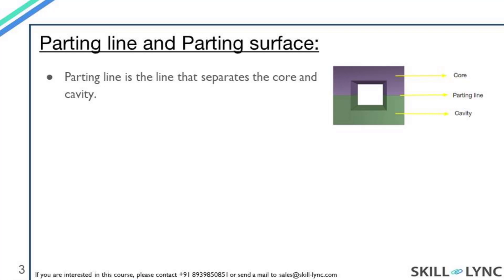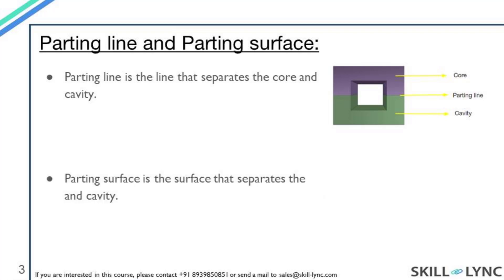So first, we will start by understanding what a parting surface is. In the second session, I had given you a brief explanation of what a parting line is. I had mentioned that the parting line is the line that splits the mold into two parts, that is the core and the cavity. The concept of parting surface is the same as that of parting line. The parting surface is the surface that splits the mold block into two parts, the core and the cavity. I will elaborate on this point a little by using the model which I created.